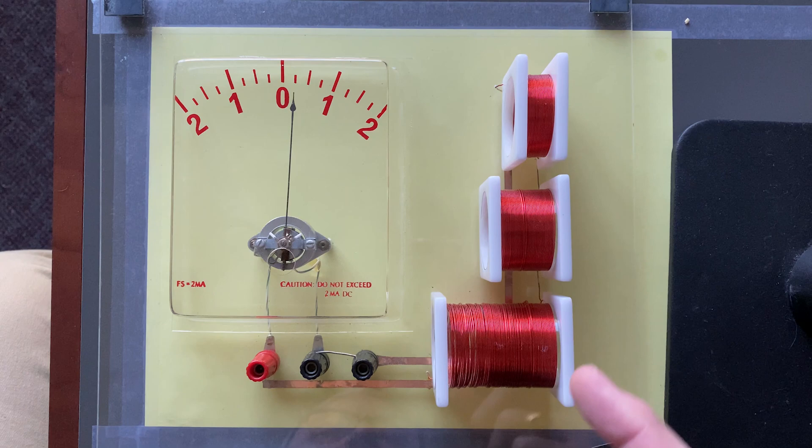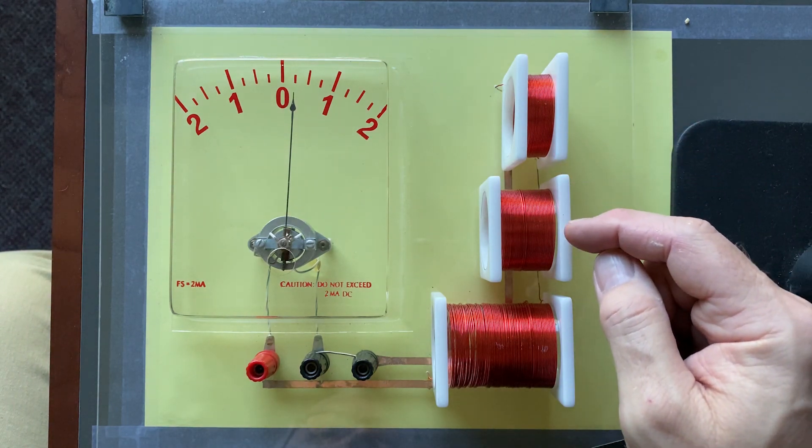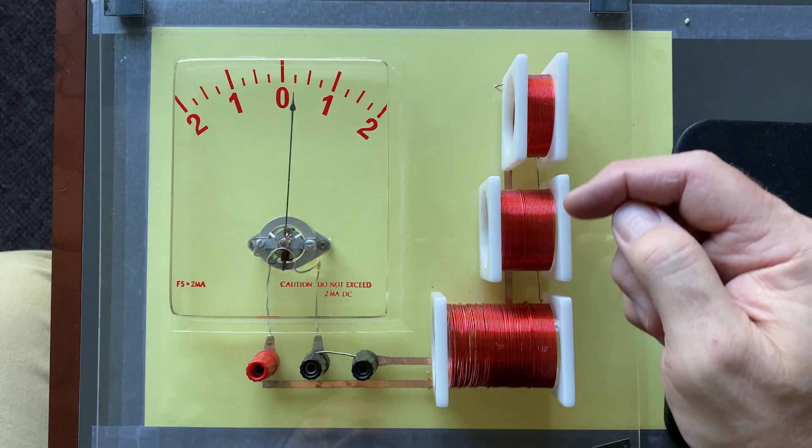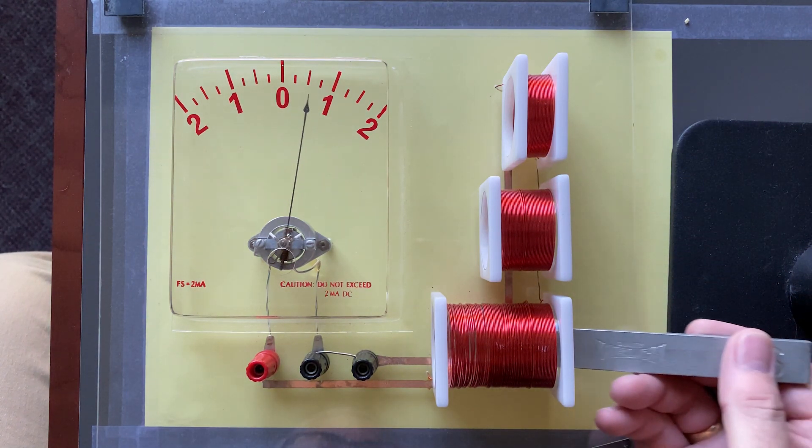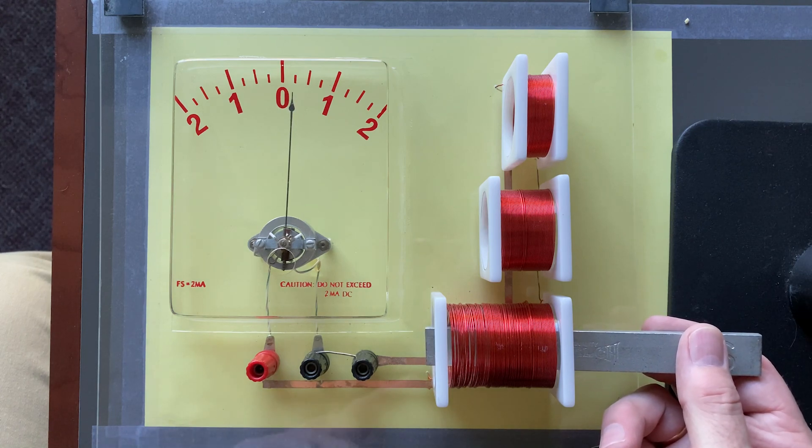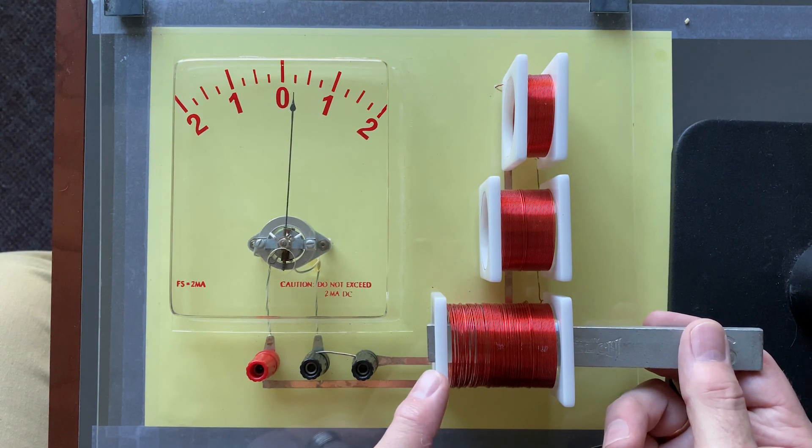So, what you can see here is that the deflection depends upon how many loops are in this coil of wire here. Obviously, we get a much bigger deflection with this larger coil here.